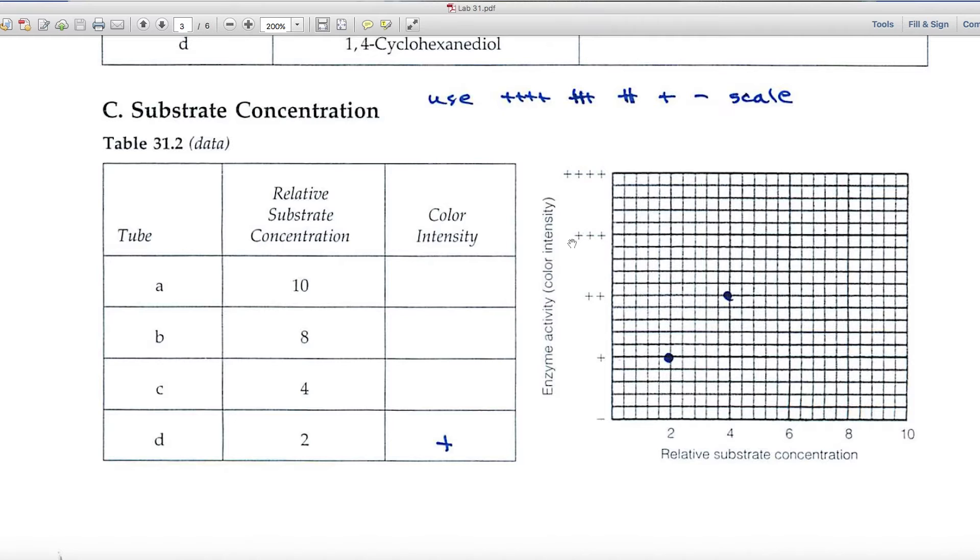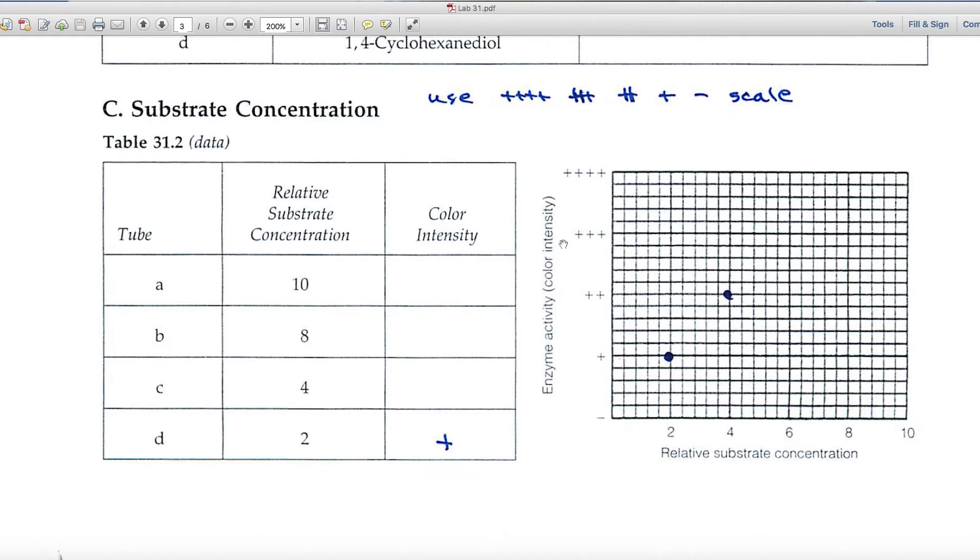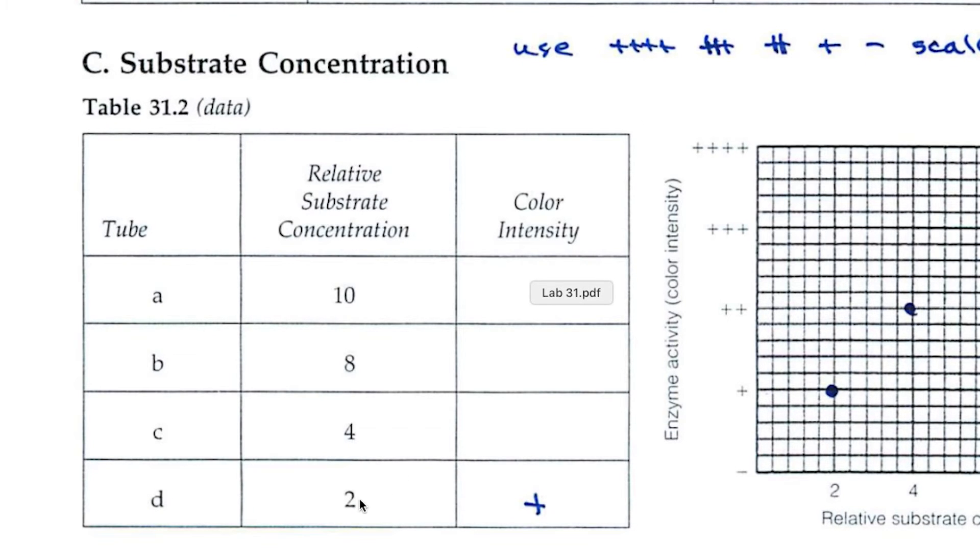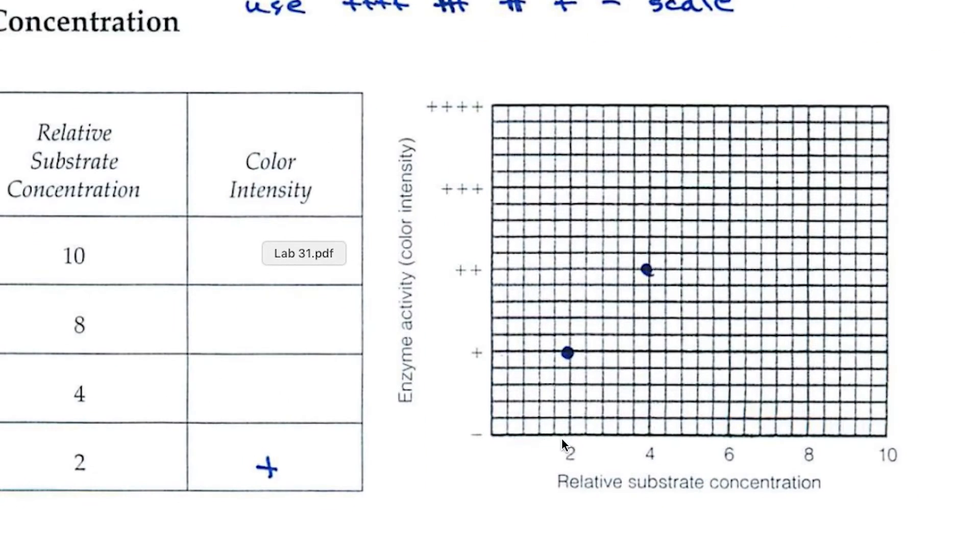And then on the right-hand side is the report part of part C, where you'll plot this information. And just for the sake of being able to plot this, let's say that at a relative substrate concentration of 2 in test tube D, you recorded the color intensity as plus. How would I plot that information? Well, down here on the x-axis is the relative substrate concentration. So I'd find 2, and I'd go up with a hypothetical line from 2. I'd come across from the intensity plus, and where those two hypothetical lines intersect, I'd put a dot.